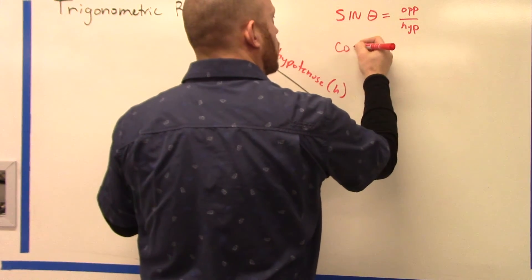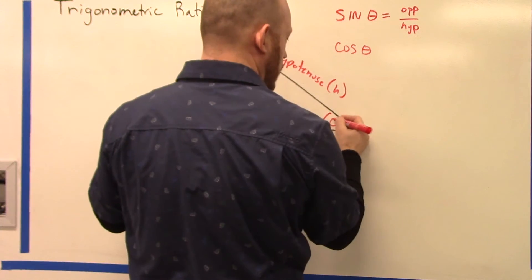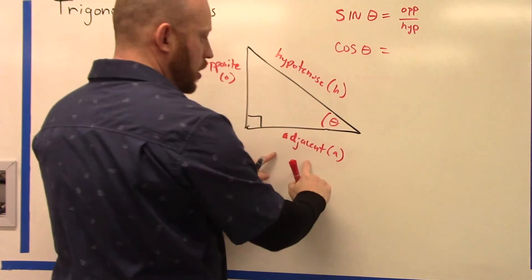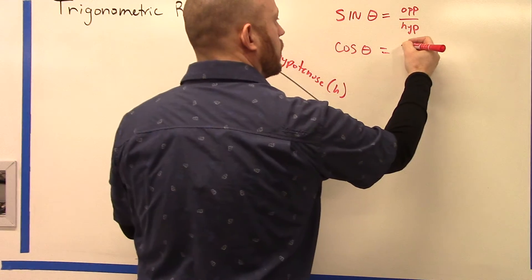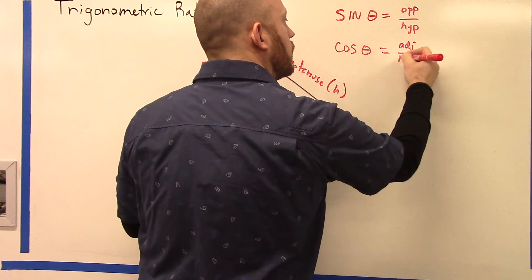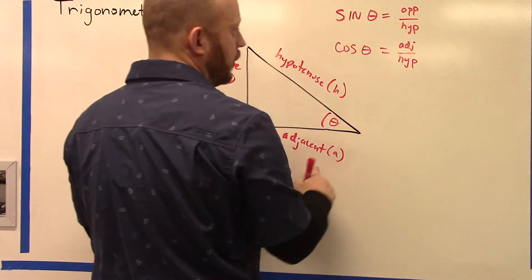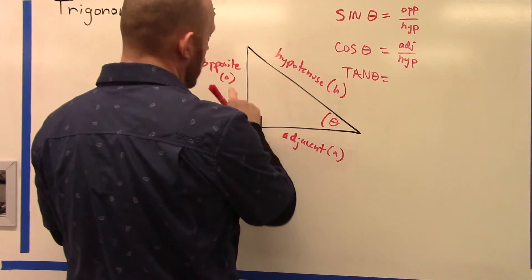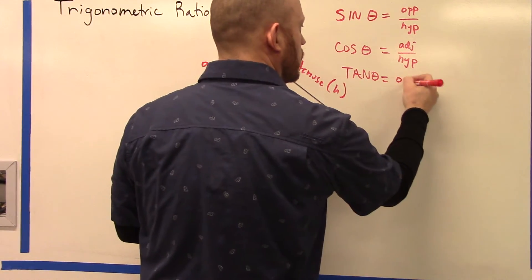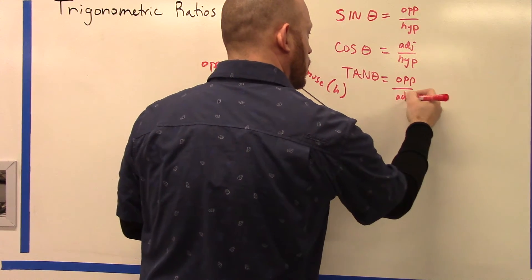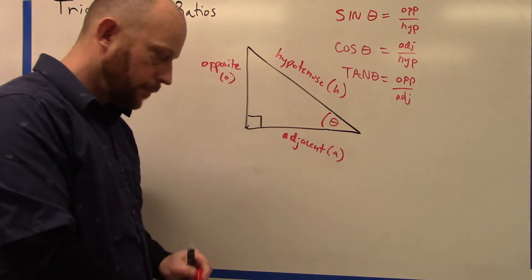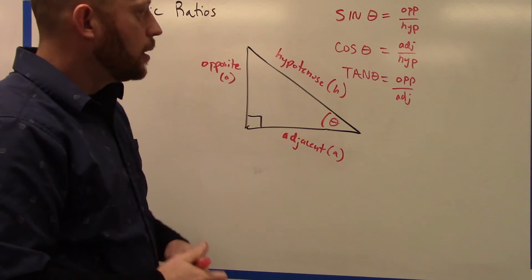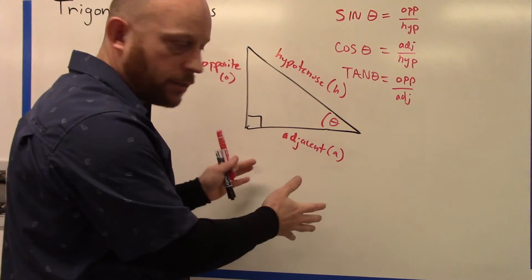The cosine—and we'll call this theta—is the adjacent over the hypotenuse. And then finally, tangent is opposite over adjacent. And again, all has to do with the orientation of the angle.